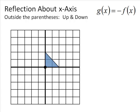The next transformation we're going to learn is the reflection. Up in the right corner you have g of x equals negative f of x. The negative sign is on the outside of the parentheses, so that means it's an up and down thing. Anything inside the parentheses is left or right; anything outside is up and down. So a negative sign outside means an up-down reflection — we're reflecting across the x-axis.